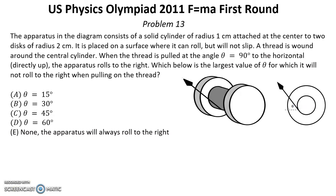Problem number thirteen. Solution for this problem you can find below this video in the description reference. The apparatus in the diagram consists of a solid cylinder of radius one centimeter attached at the center of two discs of radius two centimeters. It is placed on the surface where it can roll but will not slip. A thread is wound around the central cylinder. When the thread is pulled at the angle theta equal 90 degrees to the horizontal directly up the apparatus rolls to the right. Which below is the largest value of theta for which it will not roll to the right when pulling the thread.